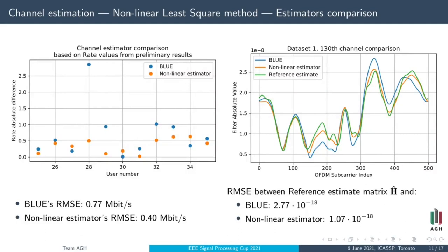So why don't we stick to the first BLUE estimation, which assumed one filter per column at the stage of least-square method? Well, we checked rates that we obtained on preliminary submission and rates produced by both estimators for the same configurations. Moreover, we compared those estimates to reference one from entire dataset 1. In both cases, nonlinear estimator turned out to be better than BLUE. Not much, but visibly.